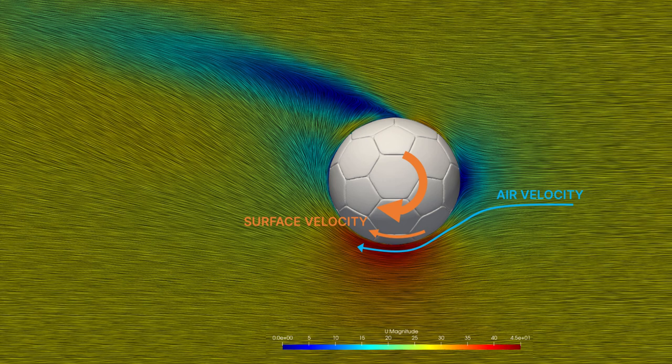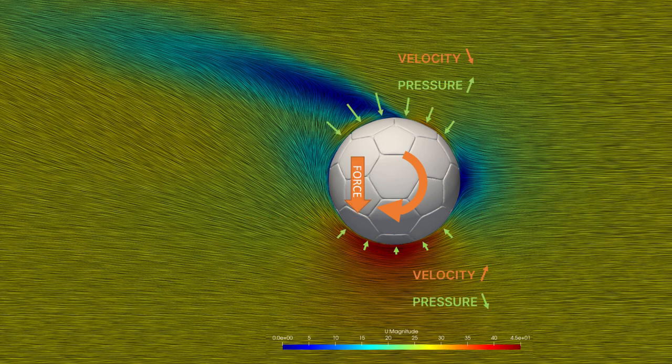To understand why this generates a lateral force, there are two interlinked ways of looking at this. The first is the Bernoulli effect, which states that the pressure goes down as the velocity goes up. So, at the forward spinning side, velocity goes down and pressure goes up.